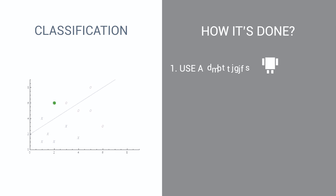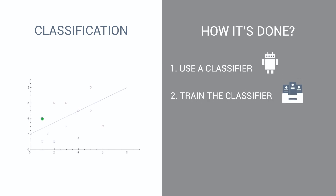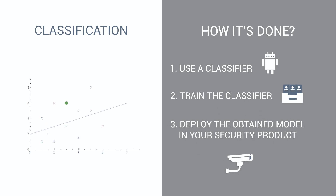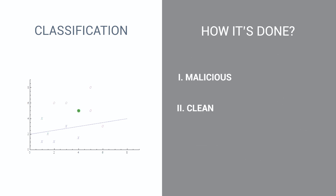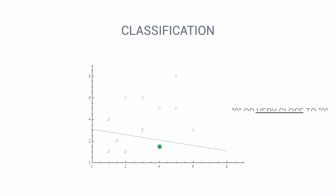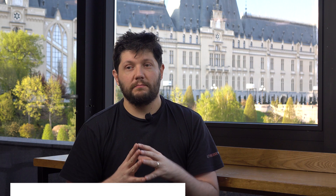Machine learning algorithms can reach 100% detection accuracy, but the problem is they will not reach zero false positives at the same time. So basically you have to work with these two hard limits.